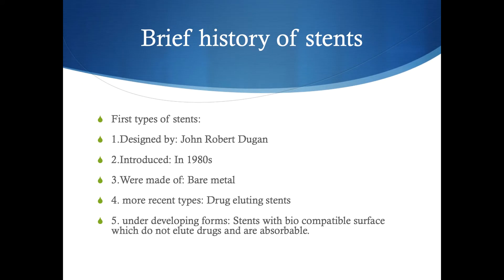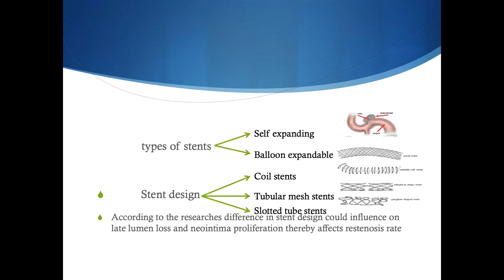The initial stents were introduced in the 1980s by John Robert Dugan, and they were bare metals. After decades of hard work on stents, drug-eluting stents and biocompatible surface stents were introduced. We have different types of stents: self-expanding and balloon-expandable. According to desired application and intensity of surgery, we need to use proper forms of stents.